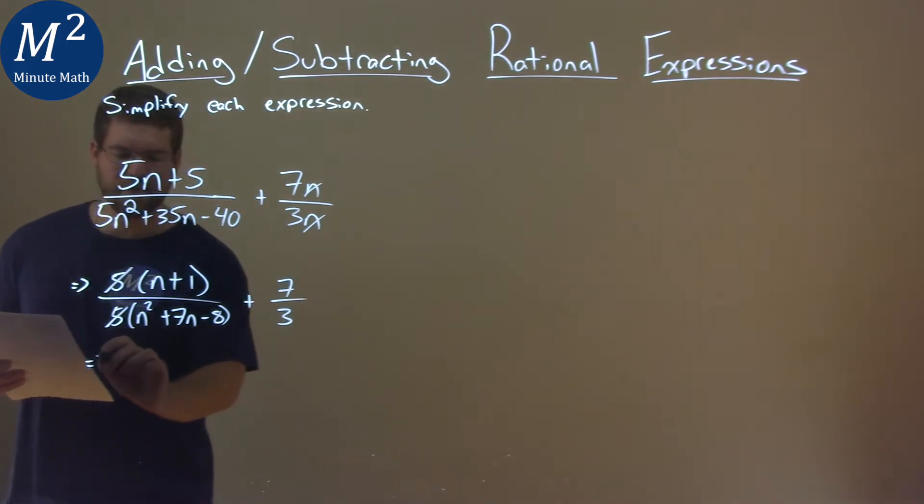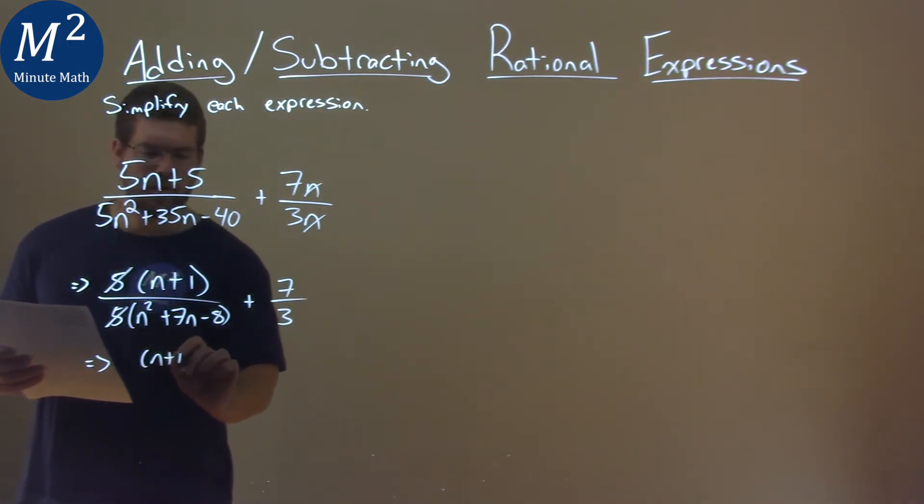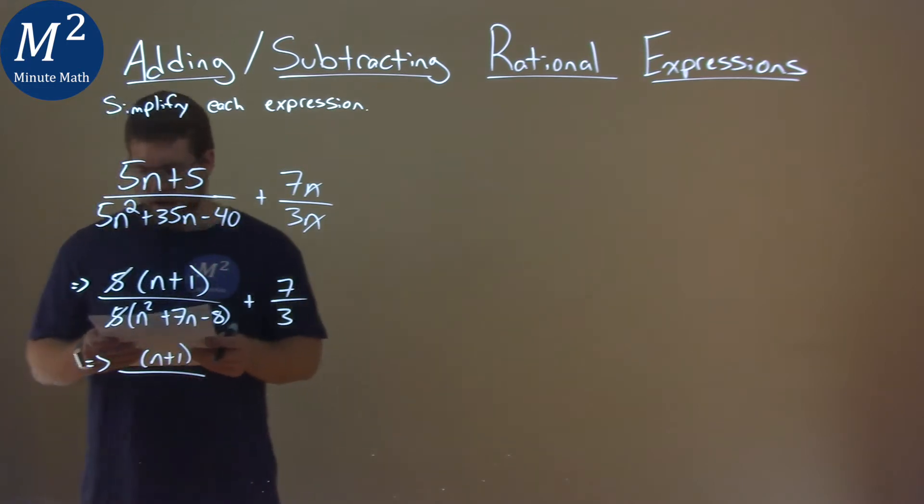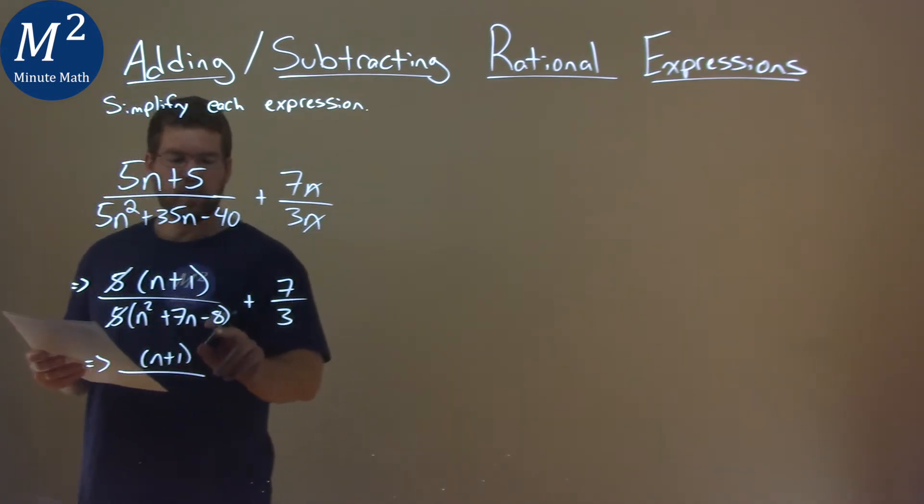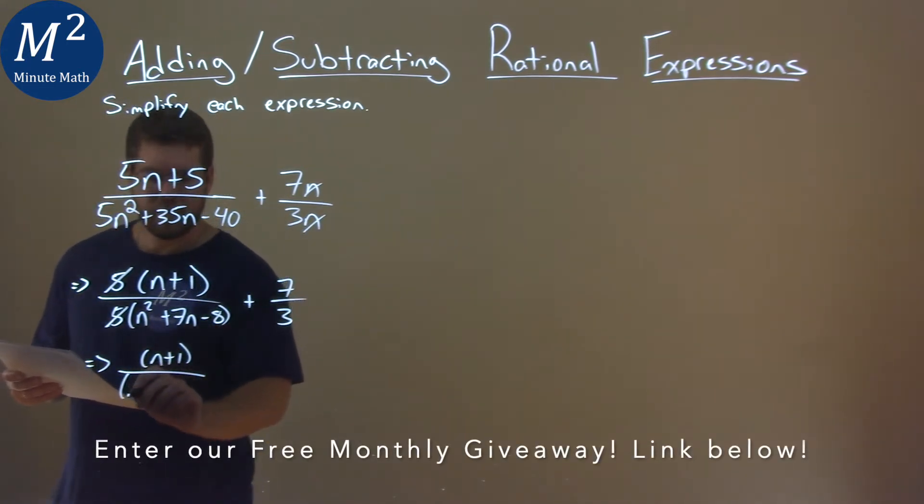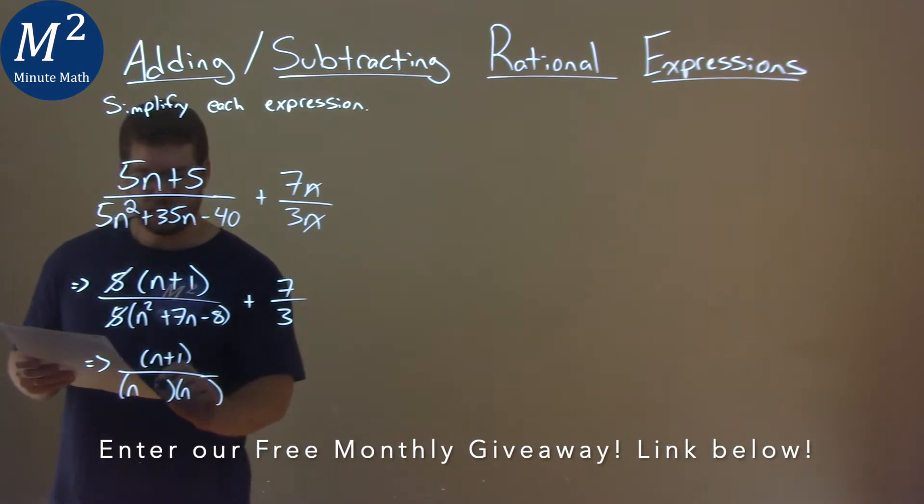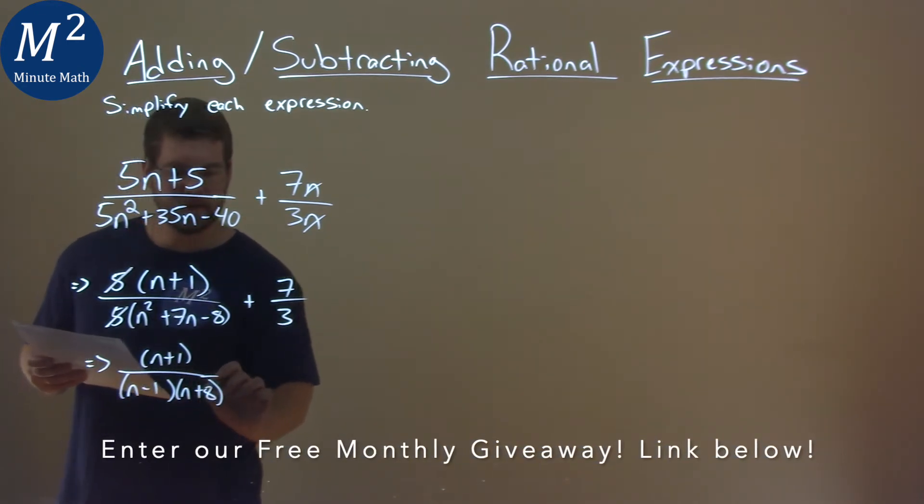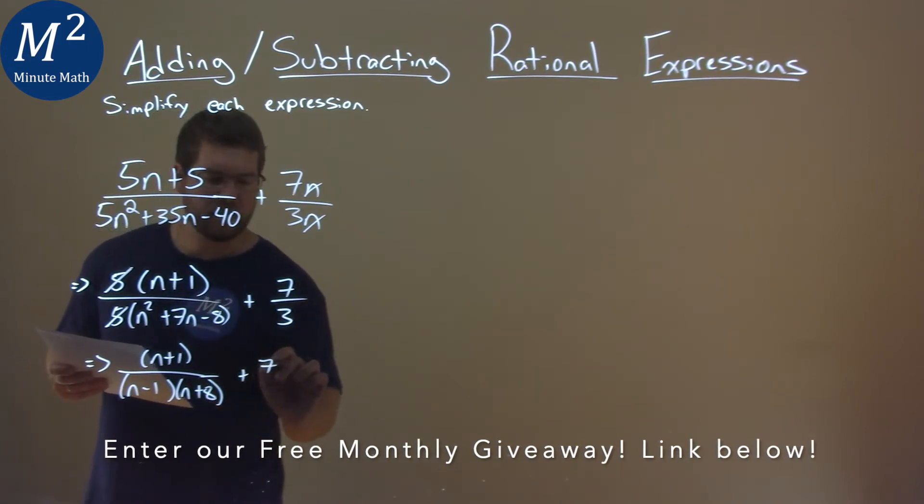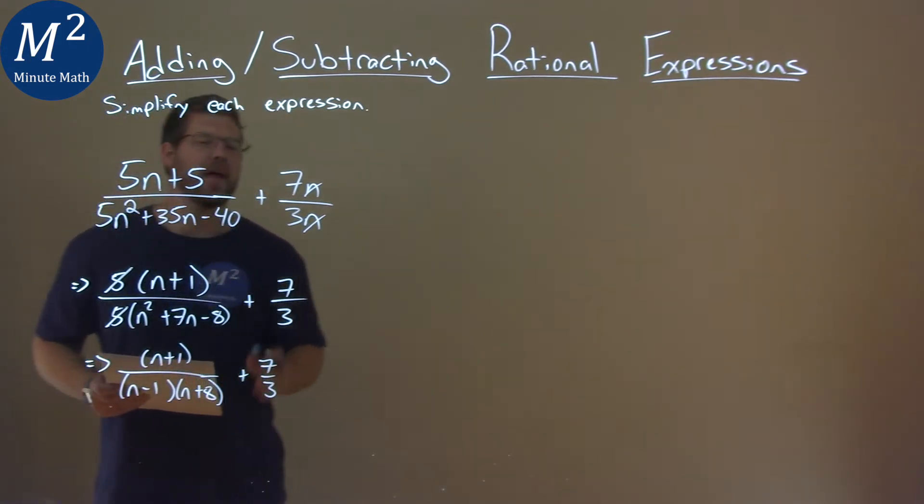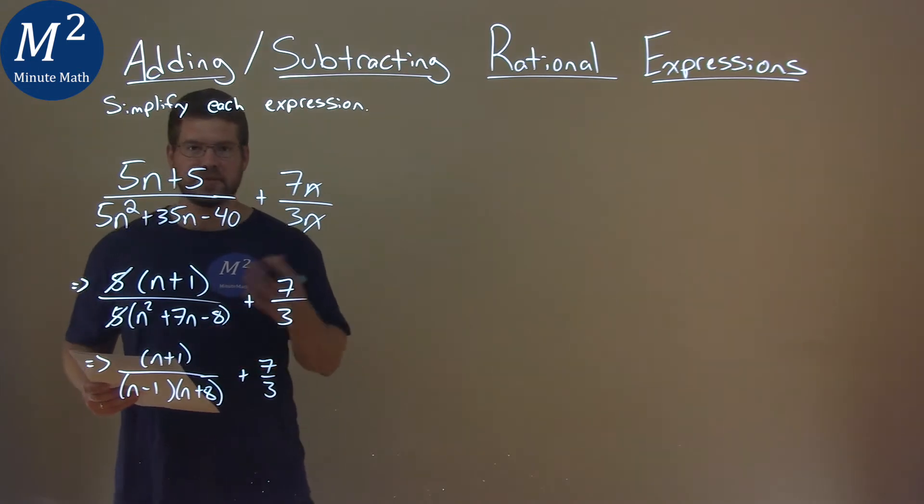Now here that looks like we can factor. So we have an n plus 1 in the numerator over, and what two numbers multiplied to be negative 8, but add to be a positive 7. And that's a minus 1 and a positive 8. And then we have 7 thirds. Now this looks a little easier for us to combine.